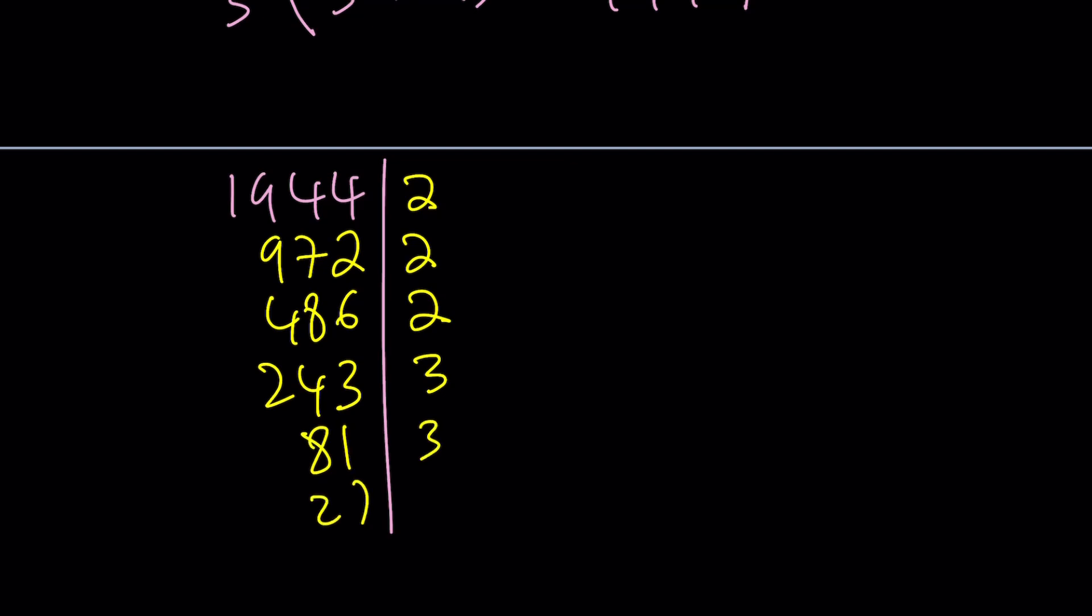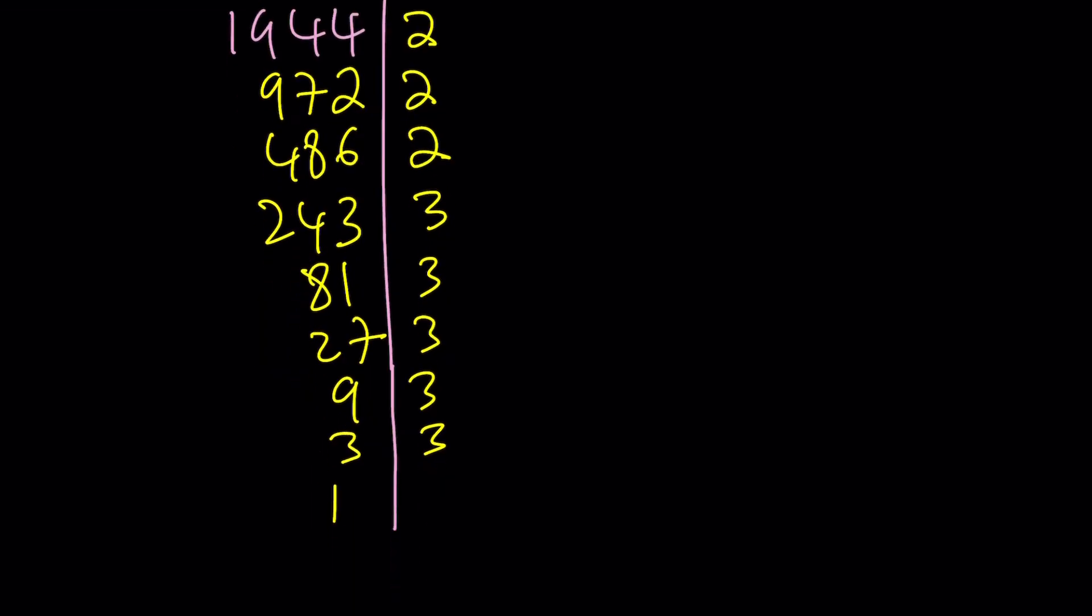Uh-oh. That's going to go on for a long time because these are powers of 3, right? And then, next one is going to be 9, and then 3, and then finally 1. Awesome. So, this kind of gives you the prime factorization, doesn't it? So, 1944 can be written as 2 to the 3rd power times 3 to the 5th power.